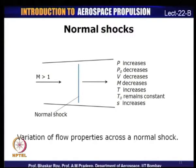Entropy across a normal shock increases because the process is highly irreversible. Some of these property variations are also valid for an oblique shock, which we will discuss next — when there are flow situations where the shock need not necessarily be normal to the flow. Under these circumstances, the shock wave can be inclined at a certain angle to the flow, and such shock waves are known as oblique shocks.